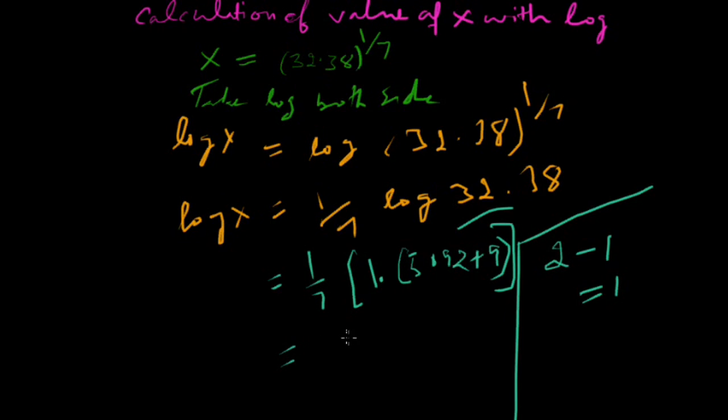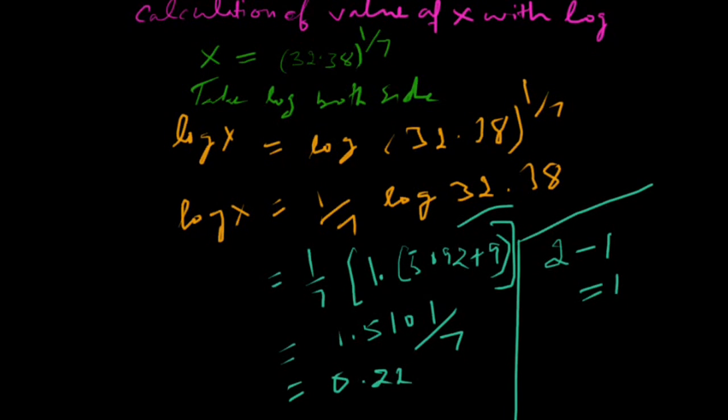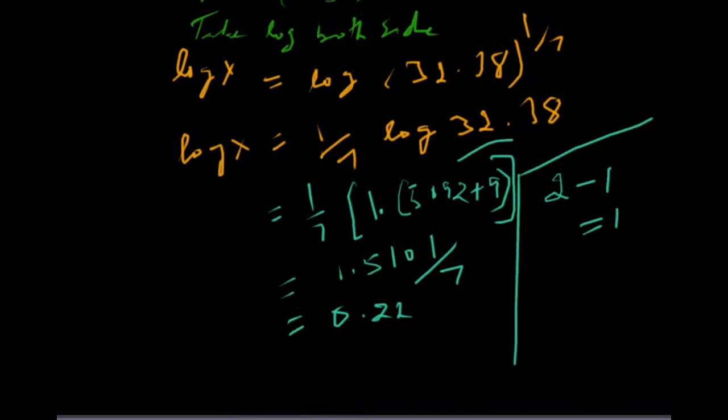After this, 1.5101 divided by 7 equals approximately 0.22. Now, for cancelling the log x, we take antilog both sides.